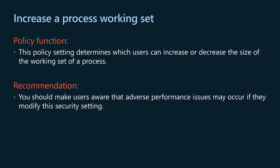The increase a process working set policy setting determines which users can increase or decrease the size of the working set of a process. The working set is the set of memory pages currently visible to the process in physical RAM — these pages are resident and available without triggering a page fault. The minimum and maximum working set sizes affect the virtual memory paging behavior of a process. By default, standard users have this right. Make users aware that adverse performance issues may occur if they modify this security setting.